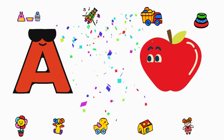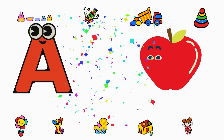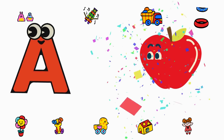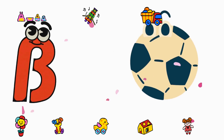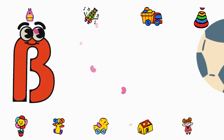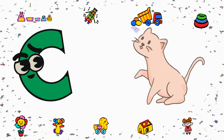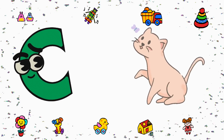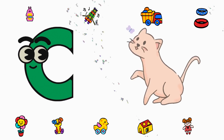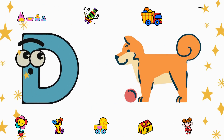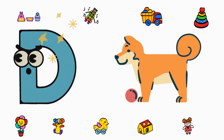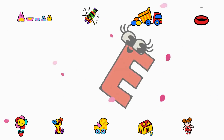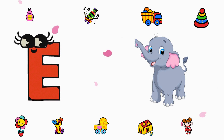A is for Apple. B is for Ball. C is for Cat. D is for Dog. E is for Elephant.